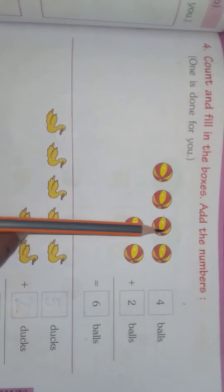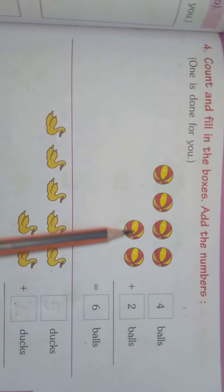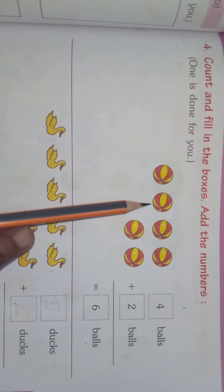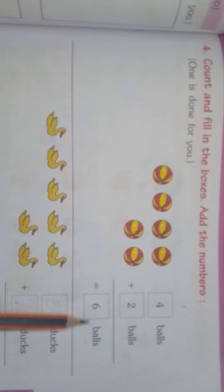1, 2, 3, 4 - four balls. 1, 2 - two balls. Now counting all together: 1, 2, 3, 4, 5, 6 - six balls. So 4 plus 2 is equal to 6.